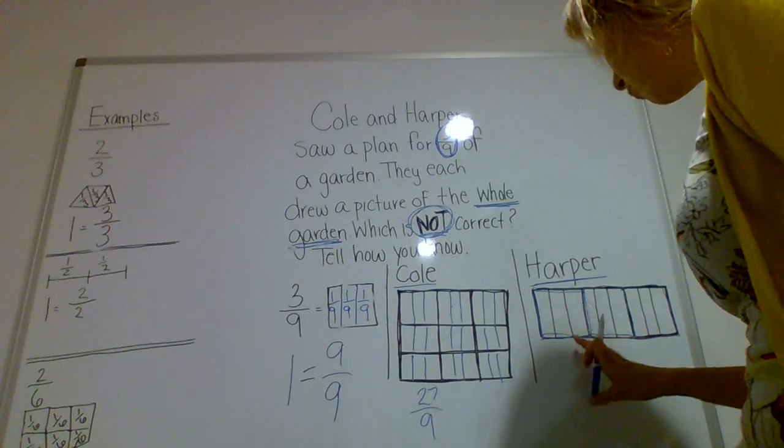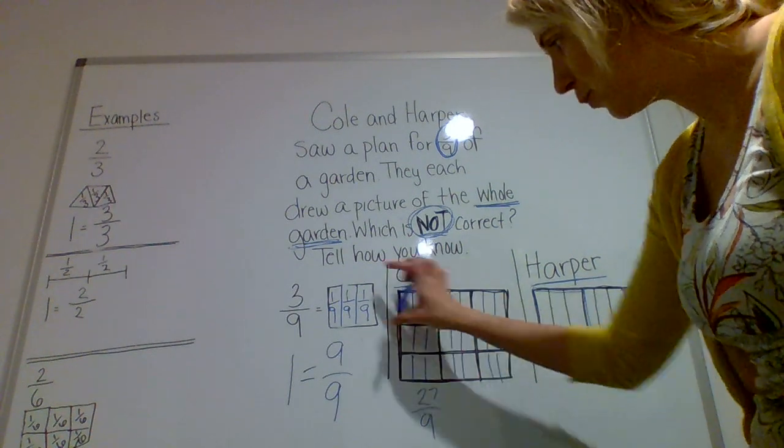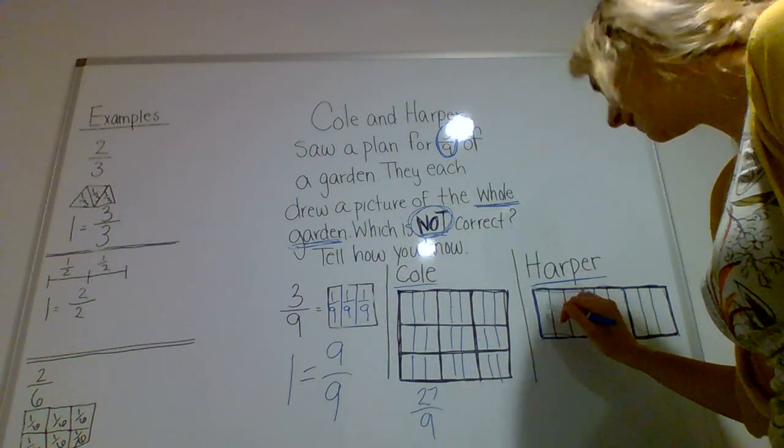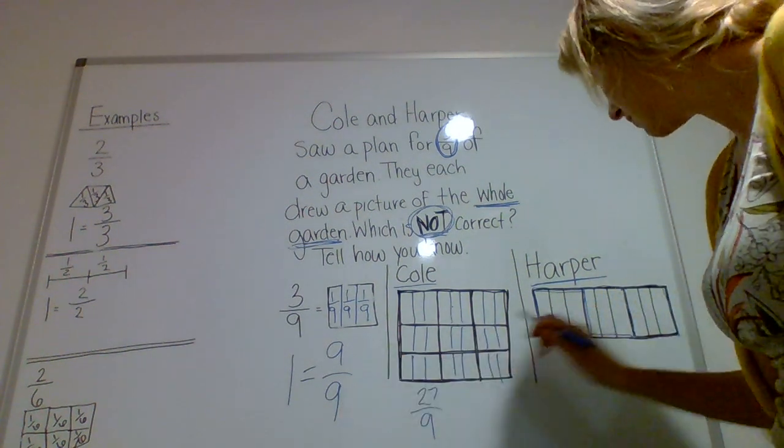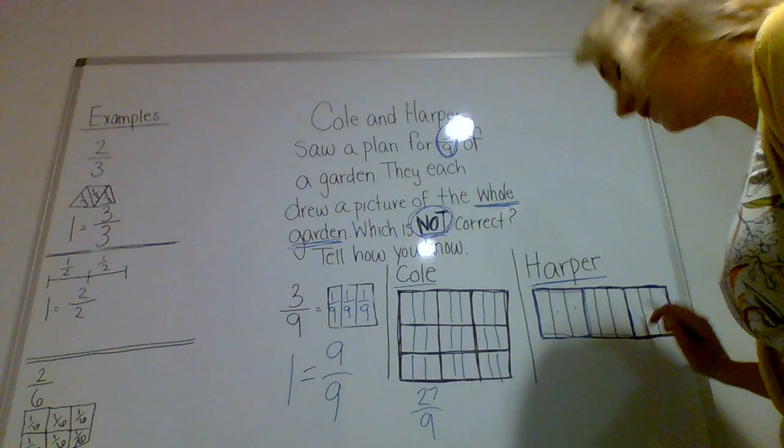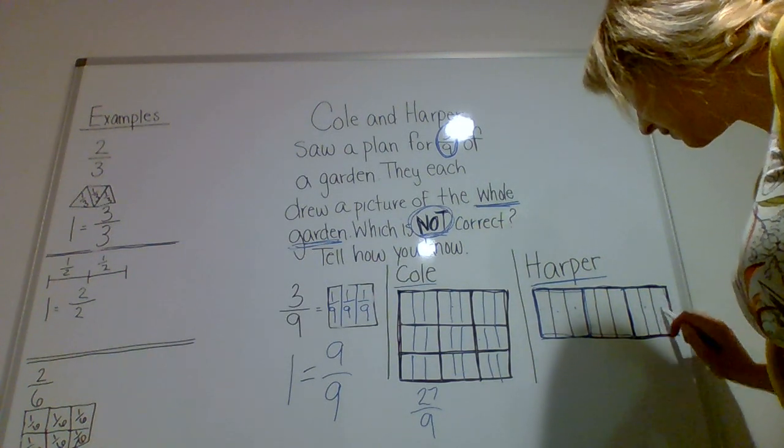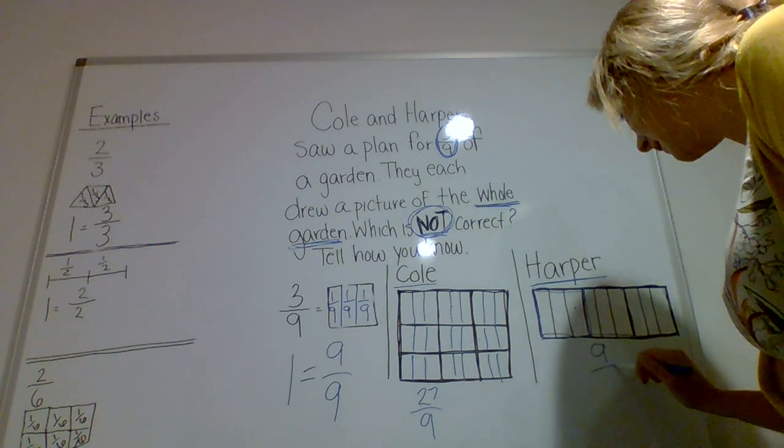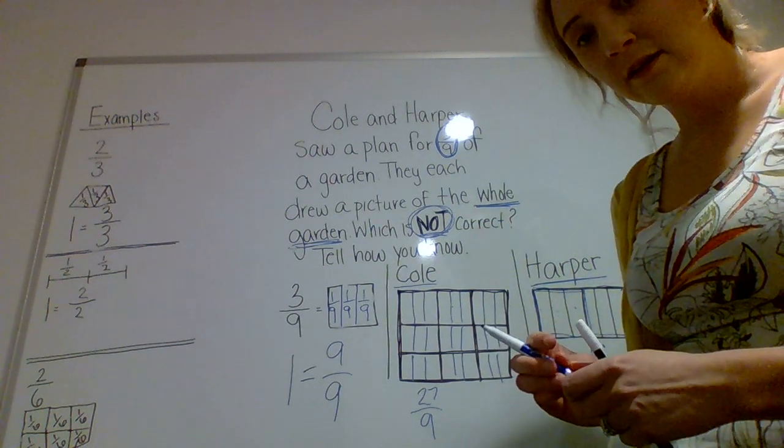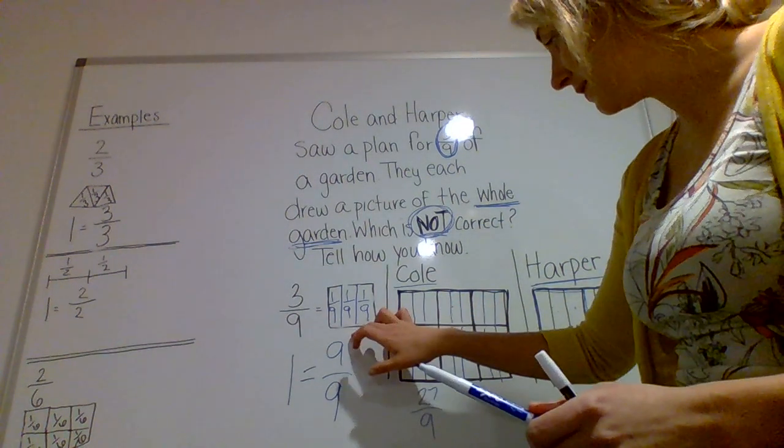All right, let's take Harper's. Wow, Harper already took her squares and she had split them like we were supposed to. So let's see if she has nine parts: one, two, three, four, five, six, seven, eight, nine. So Harper has nine out of nine parts. So she already split these up.